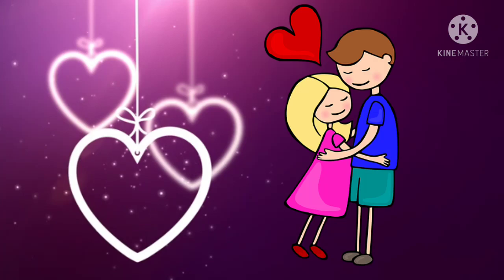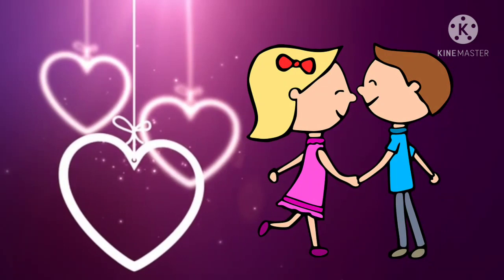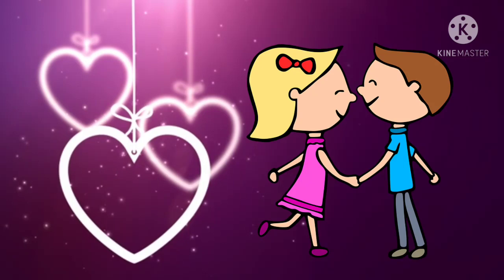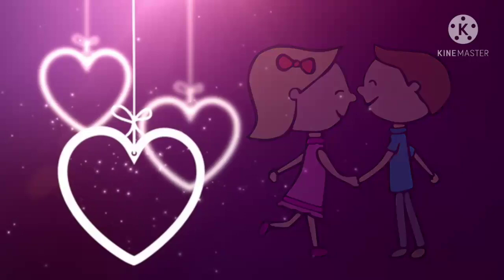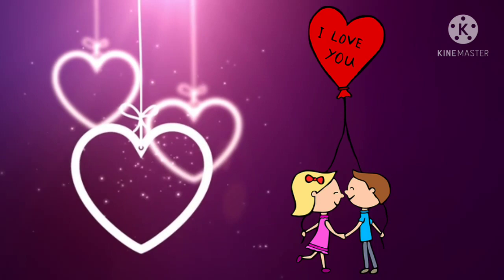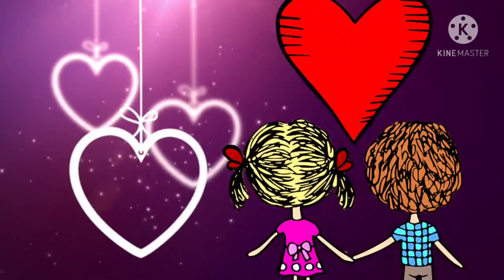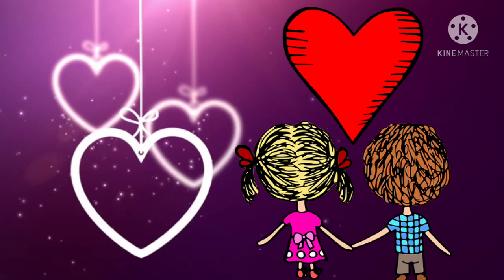Infatuation often takes place early in a relationship and may deepen into a more lasting love. Passionate love is marked by intense feelings of attraction, often involving an idealization of the other person and a need to maintain constant physical closeness. Compassionate love is marked by trust, affection, and commitment. Unrequited love happens when one person loves another who does not return those feelings.